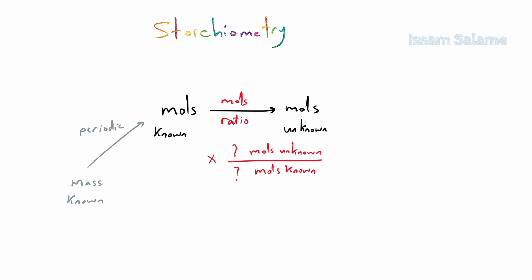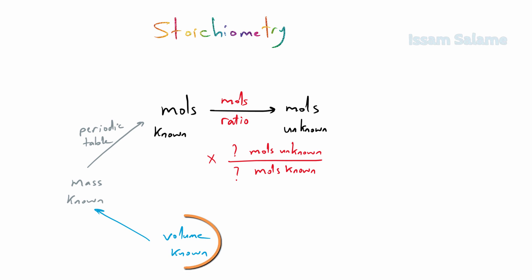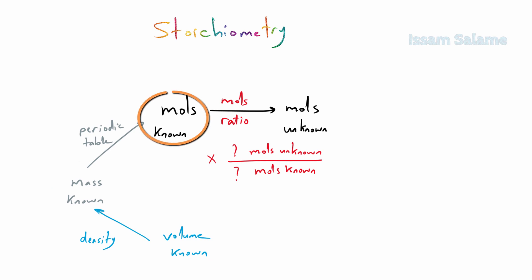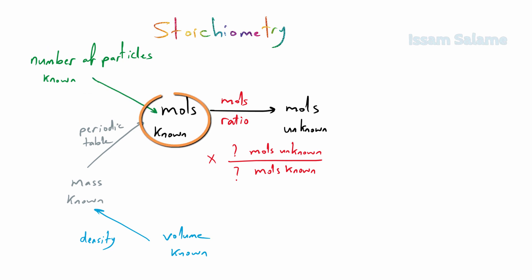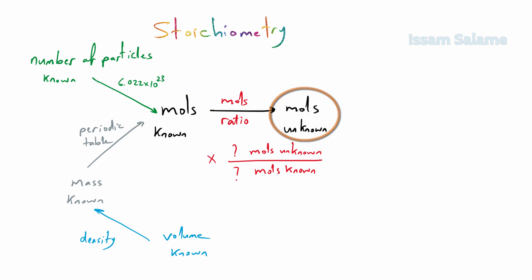If the given quantity was volume, we convert volume to mass using density, then mass to moles using the periodic table, then moles of known to moles of unknown using the mole ratio. If the given quantity was number of particles, we convert the number of particles to moles of the known quantity using Avogadro's number — 6.022 × 10²³ — then from moles of the known to moles of the unknown using the mole ratio, and the same procedure is followed for the unknown quantity.